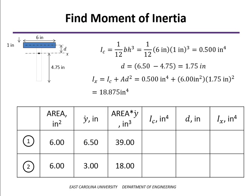The moment of inertia of that rectangle about the centroidal axis is 1/12 bh³ plus Ad². That gives us a total of 18.875 inches to the 4th. We'll add those numbers to our table.